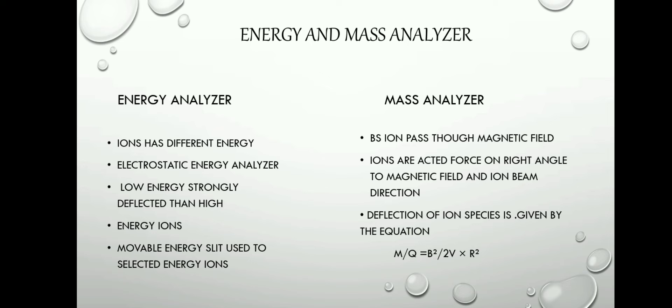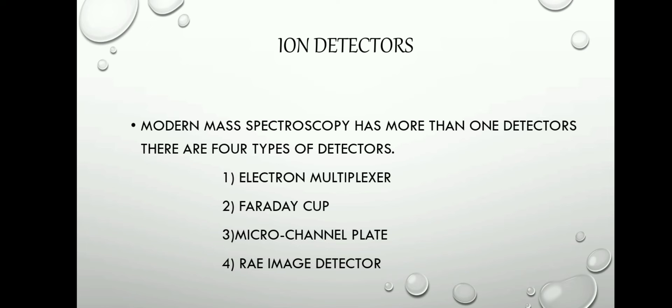Mass analyzer: ions pass through a magnetic field. Ions are acted on by a force at right angles to the magnetic field and ion beam direction. Deflection of the ion species is given by the equation: M/Q = B²/(2V) × R².